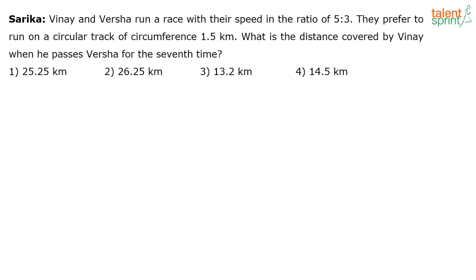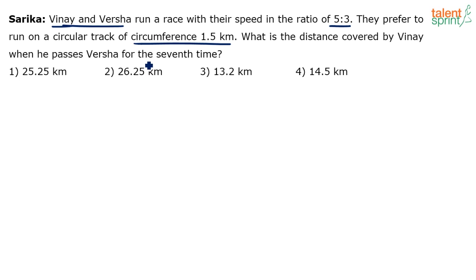Let's read through it once again. Vinay and Varsha are two persons running in a race, and their speeds are in the ratio of 5:3. Vinay's speed is 5 parts, Varsha's speed is 3 parts. They run on a circular track of circumference 1.5 kilometers. What is the distance covered by Vinay when he passes Varsha for the seventh time?